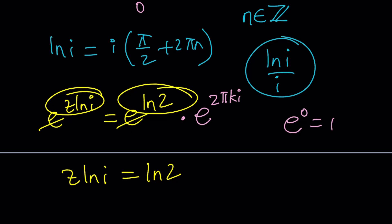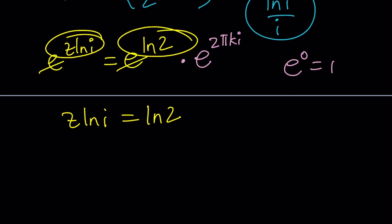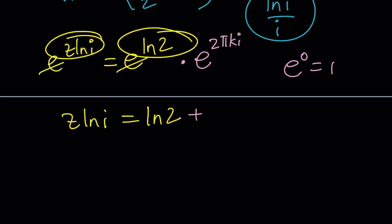If k is 0, for example, this represents e to the power 0i. So, that kind of gives us an additional 2πki here, doesn't it?